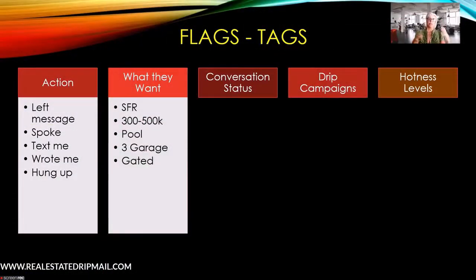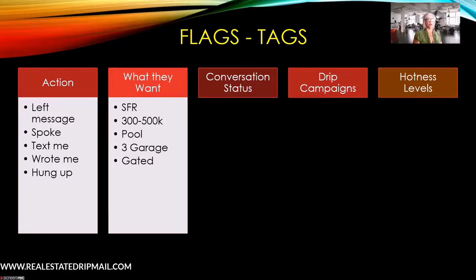The 'what they want' flag is a small list of the things most important in your market — the things most people are looking for. The reason I use these flags is so that at a glance, without digging through long notes filled with emails and texts, I can easily identify what's going on with this person. If I have a listing, I can do reverse prospecting — for example, if they told me they wanted a three-car garage and a gated community, I can run a search for everyone who specified that.